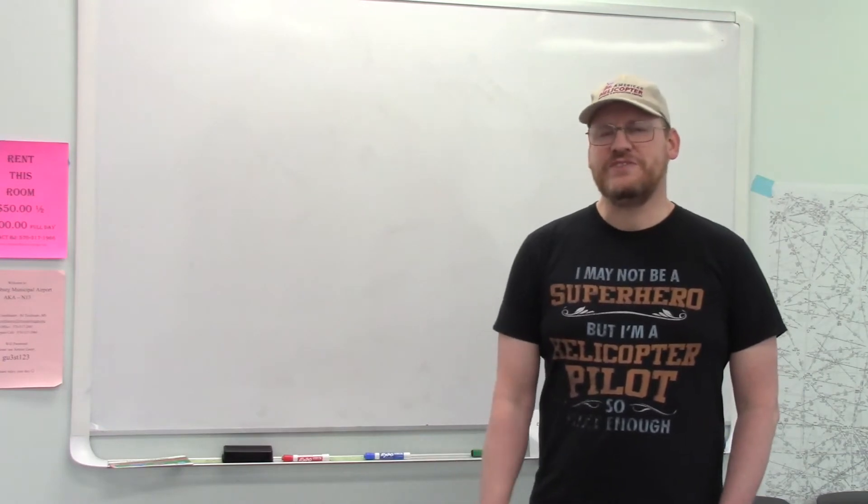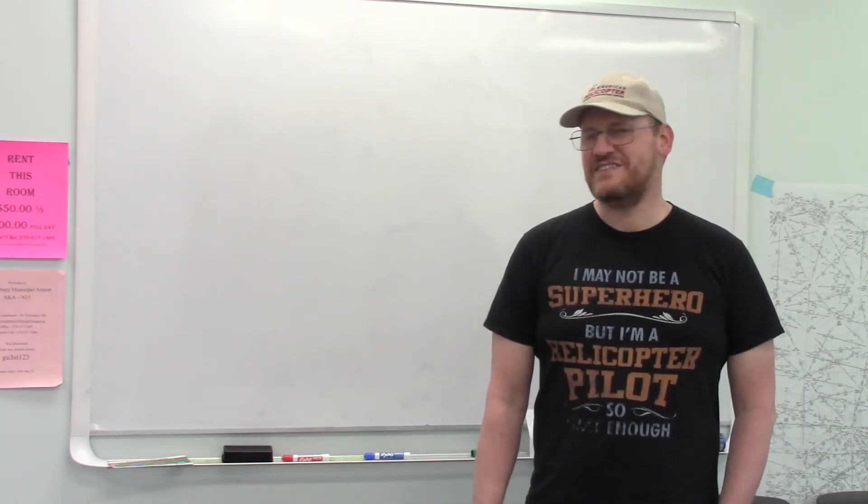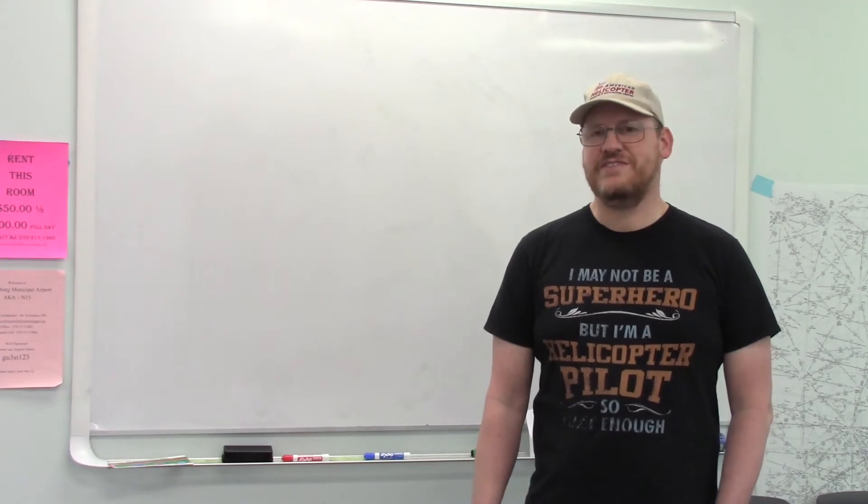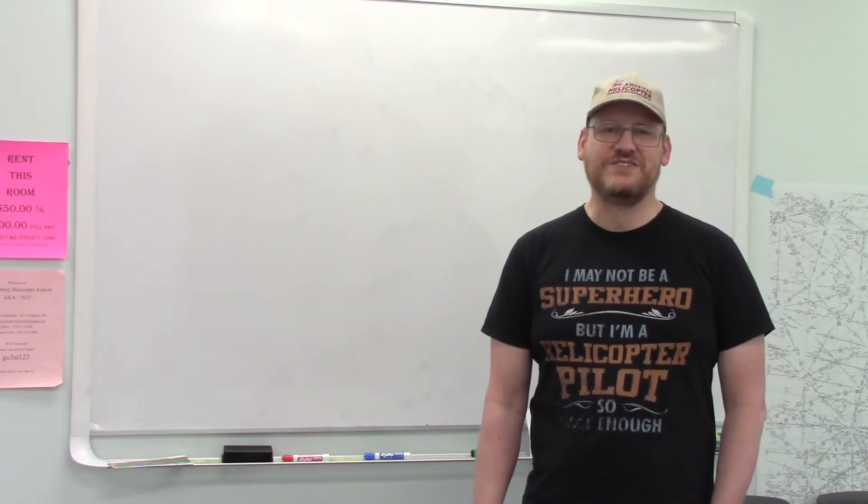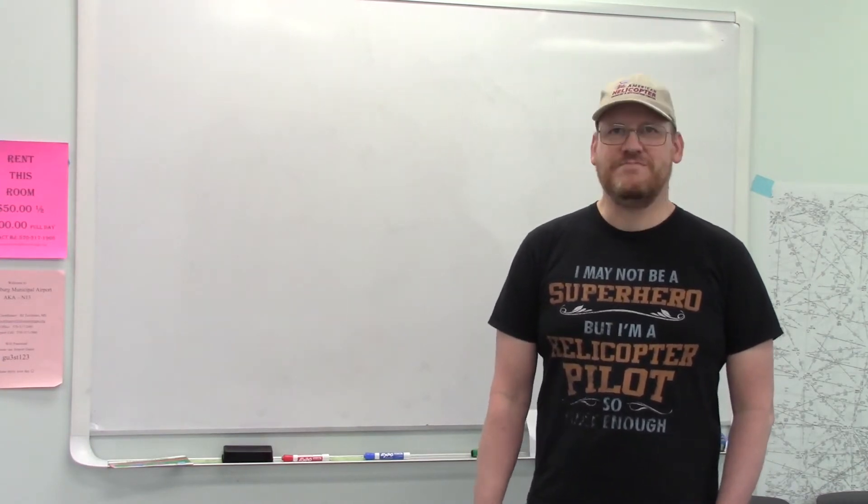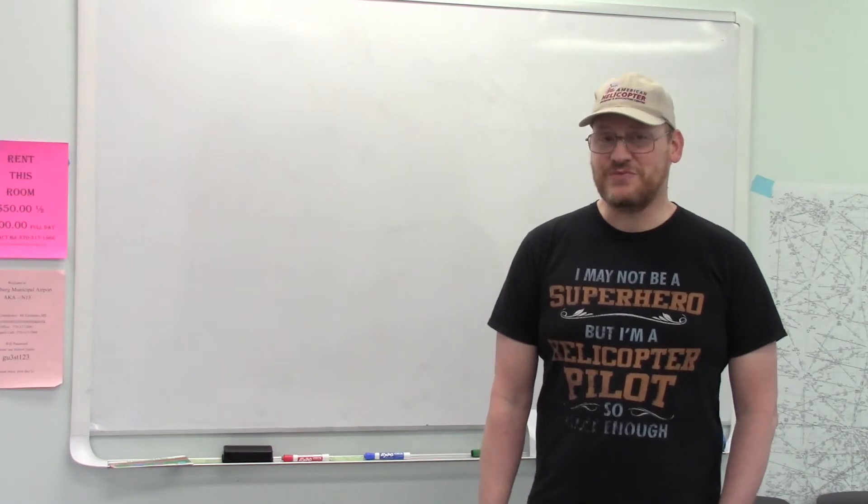Mode C is where you send your altitude. Then there's mode S. Mode S is a selective send where you can actually query a transponder. That is something that can be used for ADS-B.